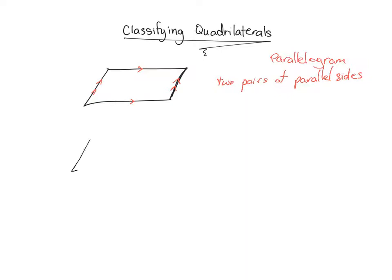The rhombus looks a lot like the parallelogram, but there is something very specific to the rhombus that was not the case for the parallelogram. We still have two pairs of parallel sides, so this is in fact a parallelogram, but there's something more specific about this parallelogram. All four sides are equal in length to each other — the word is congruent. All four sides are congruent to each other, and that makes this parallelogram more specifically a rhombus.